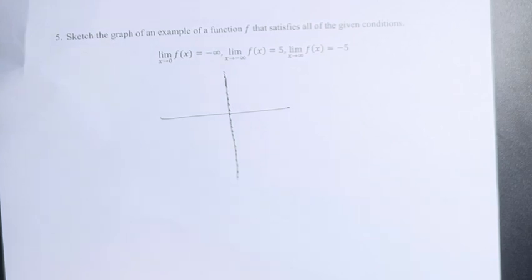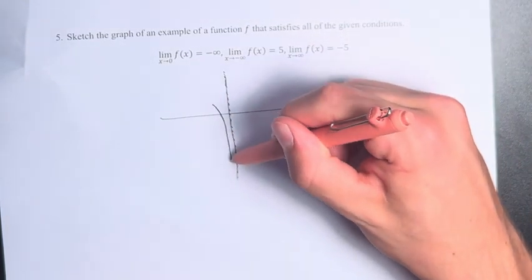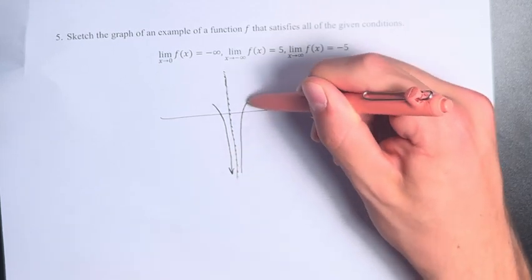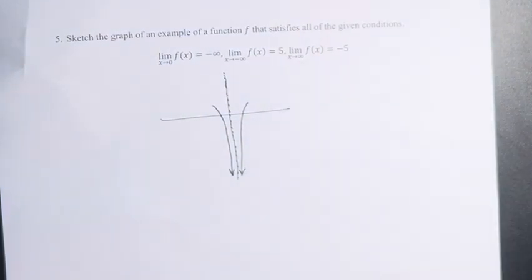What we're saying is as x gets closer and closer to 0, the value of the function is getting closer and closer to negative infinity. And what that practically means is that as we get closer to this line, the value of the function goes down off of our graph in terms of what we can actually see off to negative infinity.